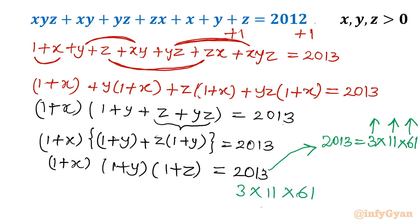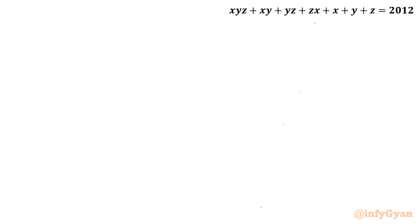Now there are 3 contenders. How will I distribute this number 3, 11 and 61? Let me write in the next slide. So 1 plus x, 1 plus y, 1 plus z equal to 2013, and that factorization was 3 times 11 times 61.